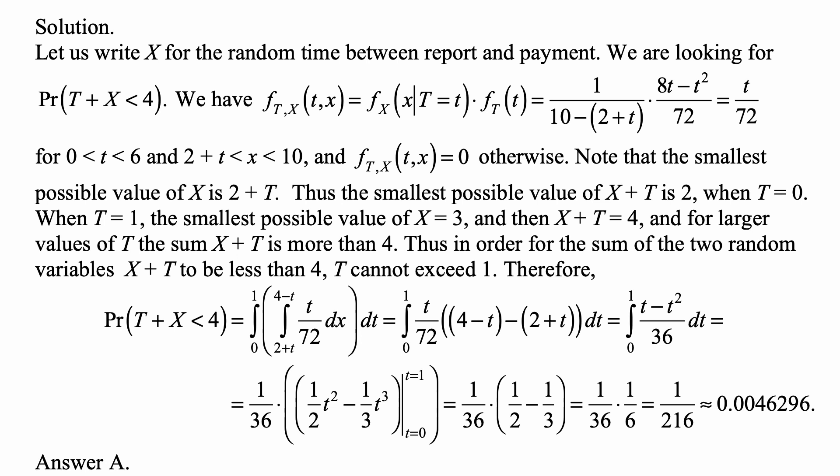And here's the solution. Let us write X for the random time between report and payment. We are looking for Pr(T + X < 4). And the joint density of t and x, f_{t,x}(t,x) is the conditional density of x given that t equals t times the marginal density of t.